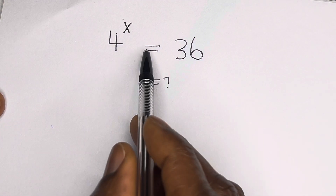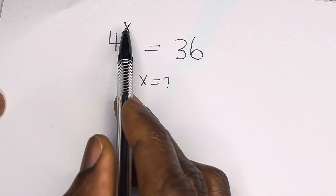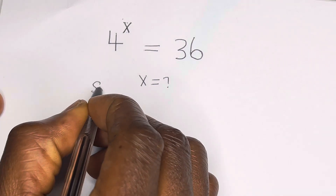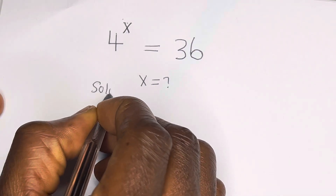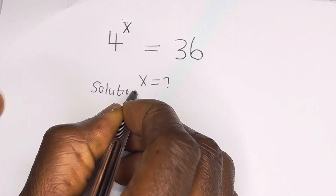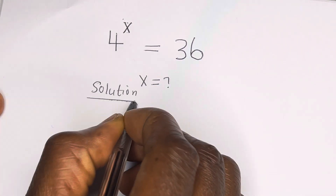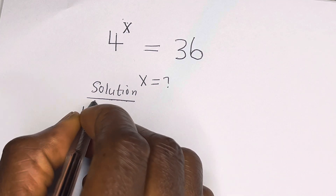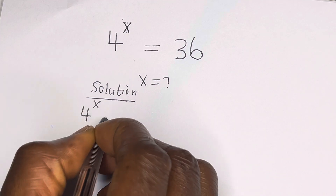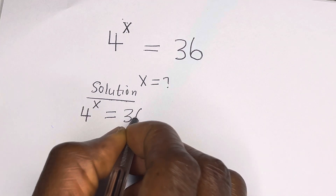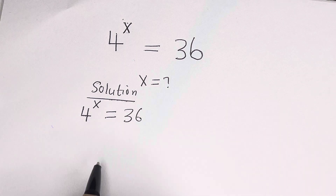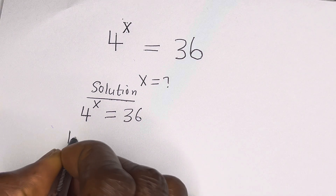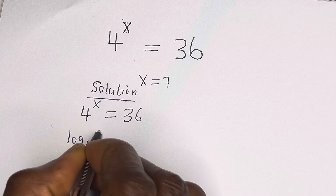Hello. How to solve for s in this equation: 4 raised to the power s is equal to 36. Solution: we have 4 raised to power s is equal to 36. Let us take the log on both sides: log 4 raised to power s is equal to log 36.